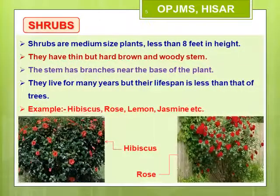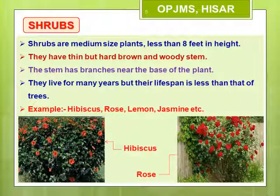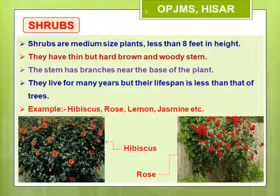Our second category is that of shrubs. Shrubs are medium-sized plants with hard and woody stems which are not very thick. They look bushy as they have many branches that arise near the base of the stem. They live for many years but their lifespan is less than that of trees. Most common examples are hibiscus, rose, lemon, jasmine, etc.